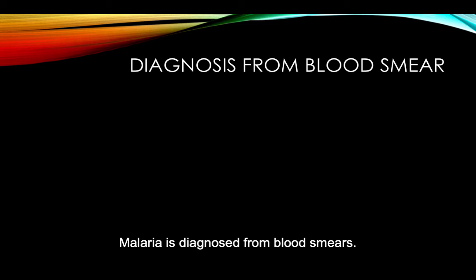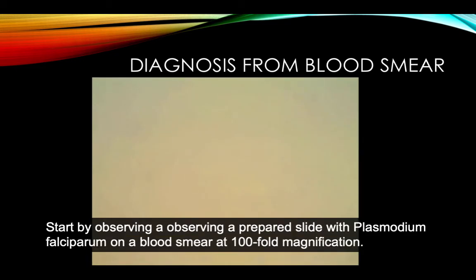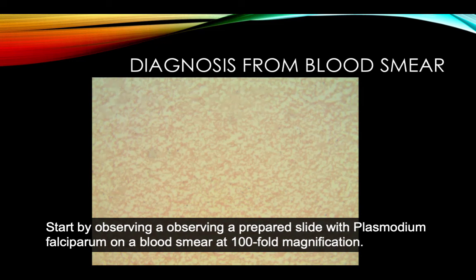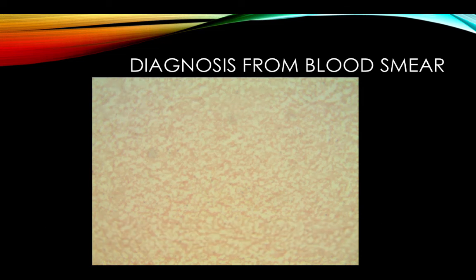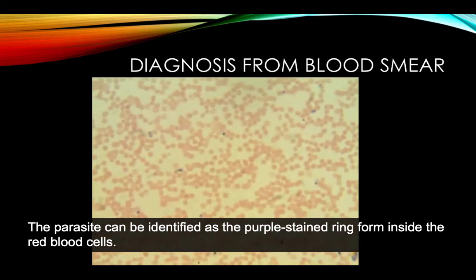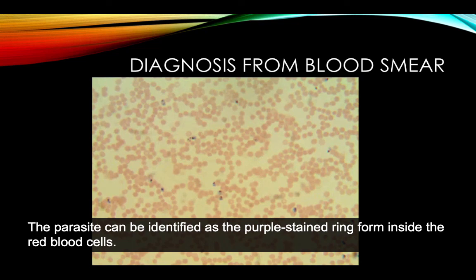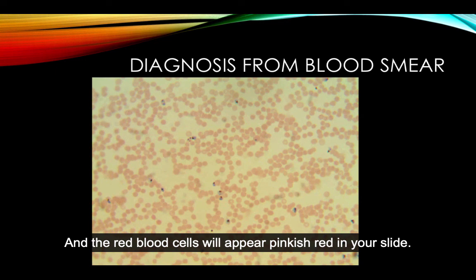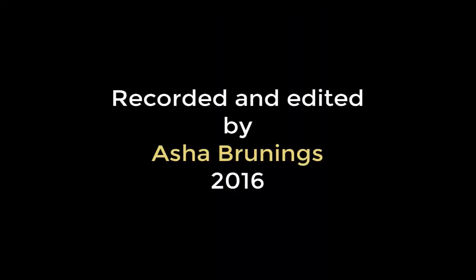Malaria is diagnosed from blood smears. Start by observing a prepared slide with Plasmodium falciparum on a blood smear at 100-fold magnification, then increase the magnification to 400-fold. The parasite can be identified as the purple stained ring form inside the red blood cells, and the red blood cells will appear pinkish-red in your slide.